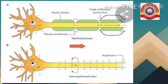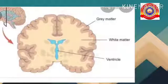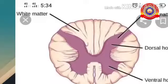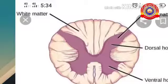In the brain, gray matter is seen outside and white matter is seen inside. But in the spinal cord, gray matter is seen inside and white matter is seen outside. That is the difference between brain and spinal cord.